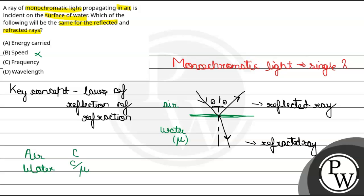अब देखते हैं wavelength — अगर air में lambda है, तो water में lambda upon mu हो जाएगा, wavelength भी same नहीं होगा। And energy हमें पता है कि E equal to hc by lambda होता है, energy lambda पर inversely proportional होता है। So अगर lambda अलग है, तो energy भी अलग होगा — तो energy भी नहीं हो सकता।